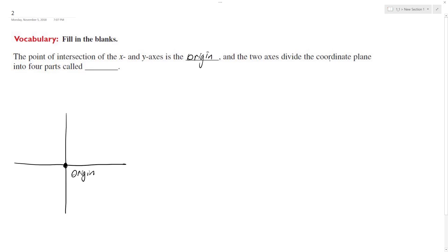The two axes divide the coordinate plane into four parts called quadrants. I'm going to show you how they're numbered here. This seems a little unconventional, but when you get into further math, like trig, it'll make sense.